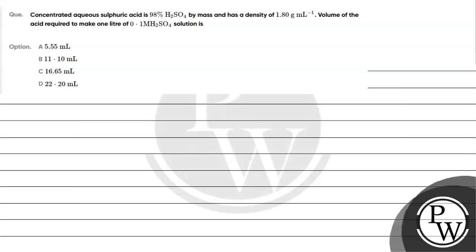Hello, let's read this question. The question says concentrated sulfuric acid is 98% H2SO4 by mass and density is 1.80 gram per milliliter. Find the volume of the acid required to make 1 liter of 0.1 molar H2SO4. The options are: A) 5.55 ml, B) 11.10 ml, C) 16.65 ml, D) 22.20 ml.